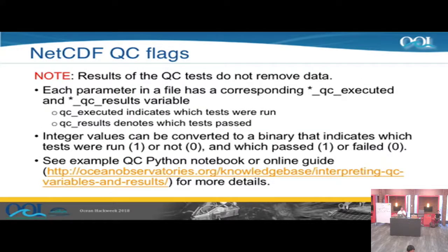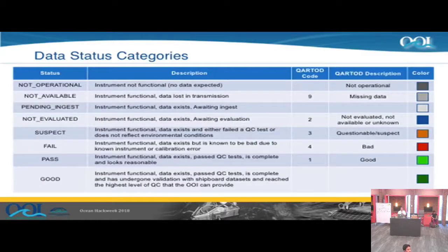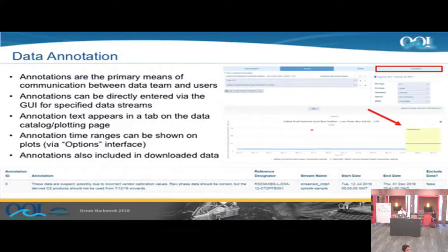The QC tests don't remove data, but each parameter you download has a corresponding QC-executed results variable as an integer value. We need to work on making this more user-friendly. You can find information on how to interpret these variables on the oceanobservatories.org site. The data team has also added annotations — data status categories that refer to lookup tables assembled by the project scientists, and they roughly correspond to QARTOD codes. These show up when you do a quick plot on the OOINet site.